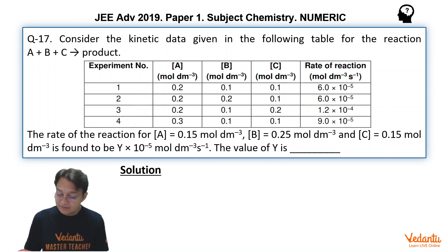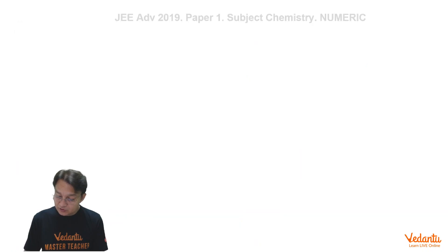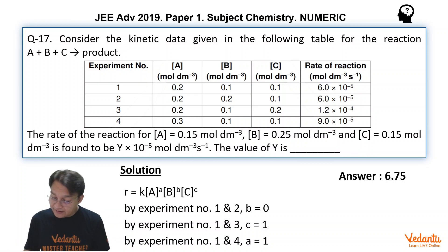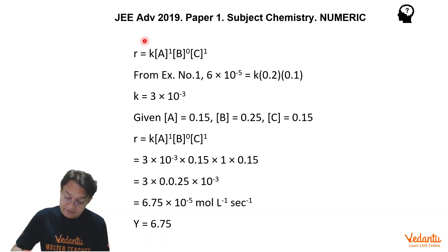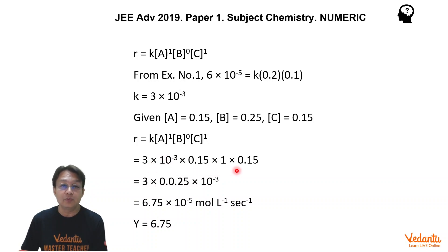We can solve all this with the help of the equations shown here in a systematic manner. Once we determine the orders, we write: rate equals K times A raised to the power of 1, B raised to the power of 0, C raised to the power of 1. From experiment number 1, 6 into 10 to the power of minus 5 equals K times 0.2 times 0.1, and we find the value of K. Given that A equals 0.015 and C equals 0.15, the rate becomes 3 into 10 to the power of minus 5, and upon solving we get the answer of 5.